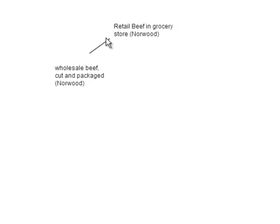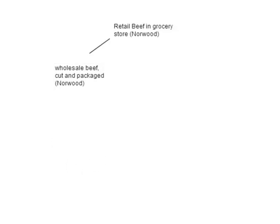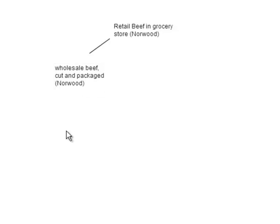Just skip this. Notice that we've got the product of interest — retail beef and grocery store. What we're trying to do is think of all the inputs that go into producing retail beef, the inputs that go into producing that input, and so on. I want each student to add one input to the diagram and identify yourself by putting your last name in parentheses.